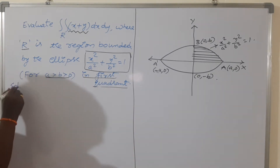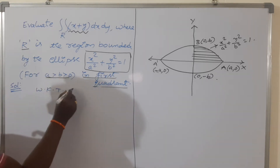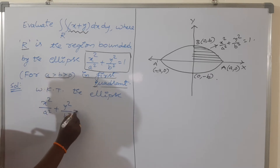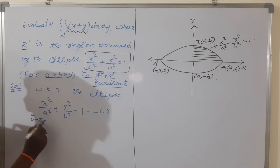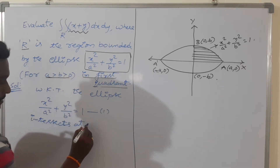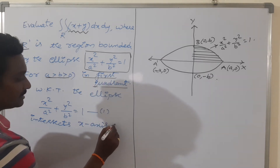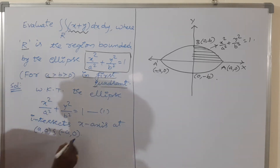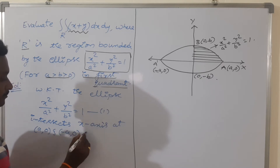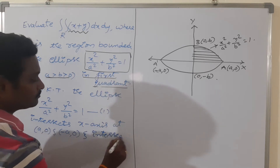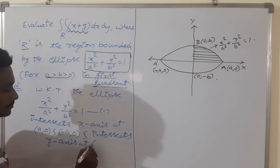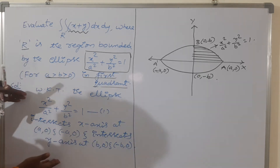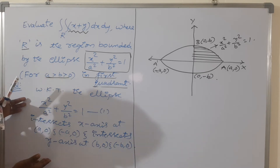Write the solution. We know that the ellipse x squared by a squared plus y squared by b squared is equal to 1 intersects the x-axis at a comma 0 and minus a comma 0, and the y-axis at 0 comma b and 0 comma minus b. This is the brief explanation of the ellipse.